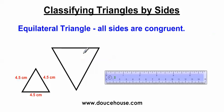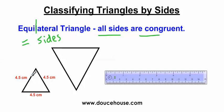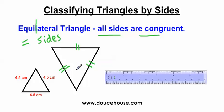Moving on, we have the equilateral triangle — all sides are congruent. Just like with equiangular, I can break this word apart: 'equi' for equal, 'lateral' for sides — like a quadrilateral has four sides, 'lateral' means sides. So equilateral means equal sides. I measured all the sides here and since every side measures the same, this is an example of an equilateral triangle. If I put one tick mark on all three sides, since they have the same number of tick marks, this is an equilateral triangle. It could be two tick marks — that still means all sides are congruent and it's equilateral.